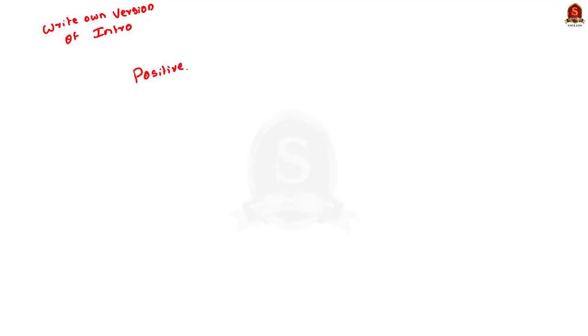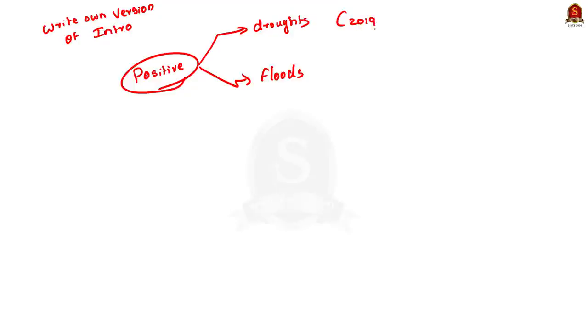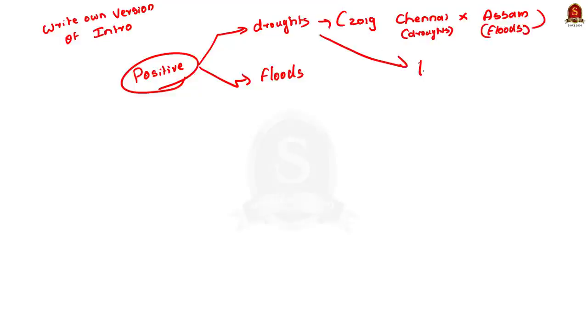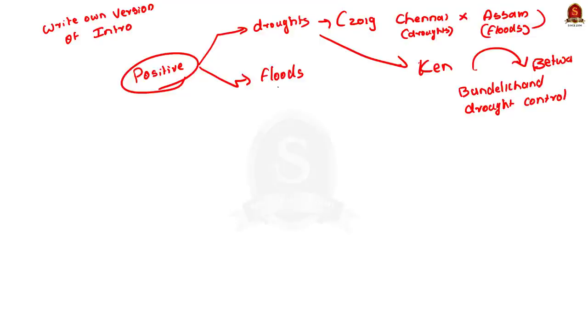In the body, start with the positive aspects of interlinking of rivers — how it will help reduce droughts, flooding, and aid river navigation. Link current affairs: in 2019, when Chennai was facing one of its worst urban droughts, Assam was facing floods. You can say how interlinking of rivers would prevent such incidents. Also mention the Ken-Betwa interlinking project, where water is transferred from the water-rich Ken River to the water-poor Betwa River, helping the drought-prone Bundelkhand region. Writing with examples will fetch you more marks.